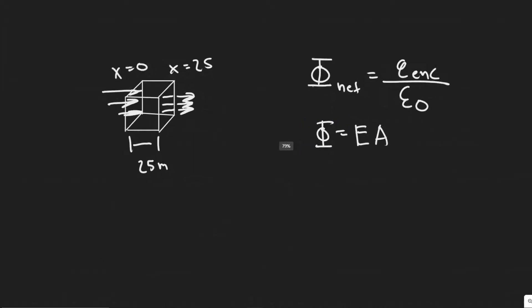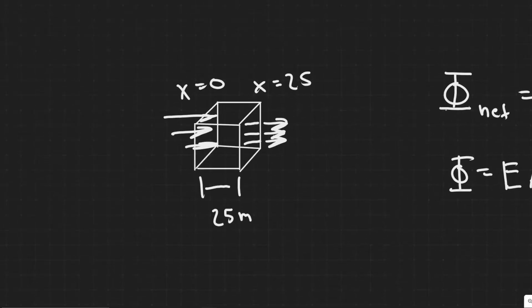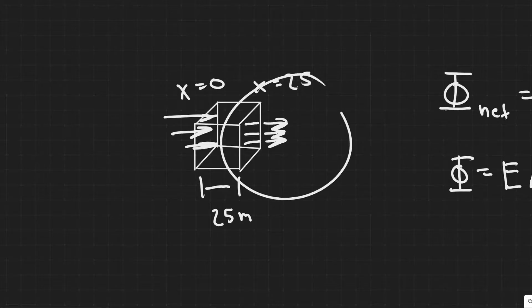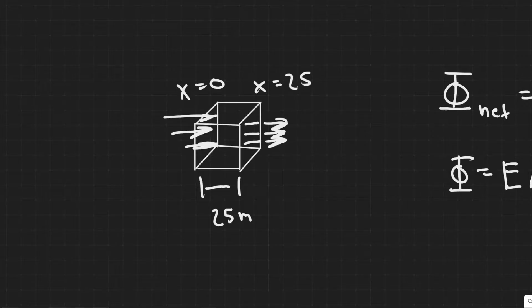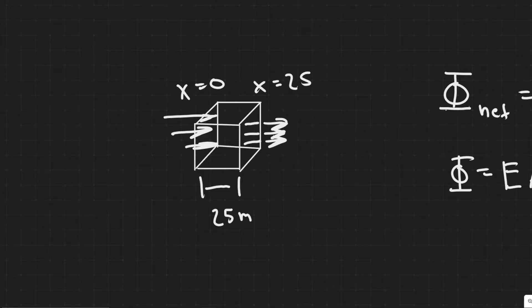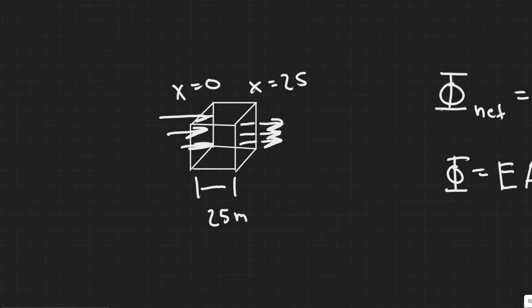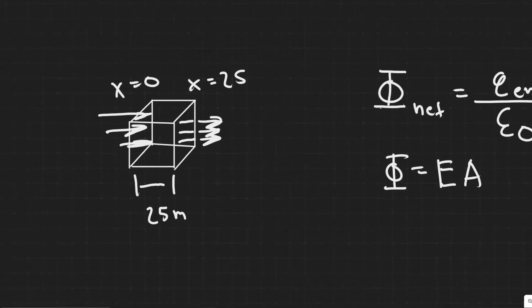I went ahead and drew what's going on in the figure. We have the electric field entering one side at E equals 560 N per Coulomb, and when it leaves the opposite side, it's E equals 410 N per Coulomb. What we're trying to find is the charge enclosed in this cube.